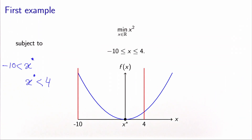We introduce the concept of active constraints as an inequality constraint which is verified with equality — it's not the case here. Because these two constraints are not active, we see that if we had ignored them, we would have obtained the same solution.